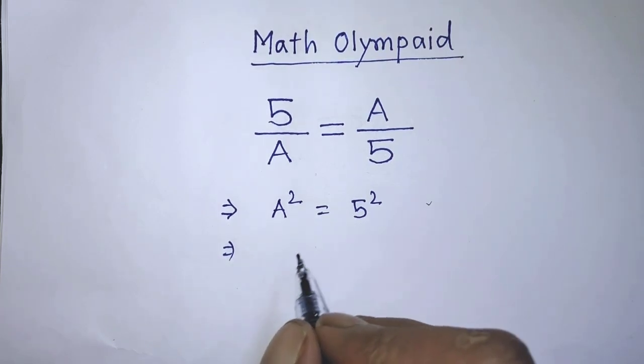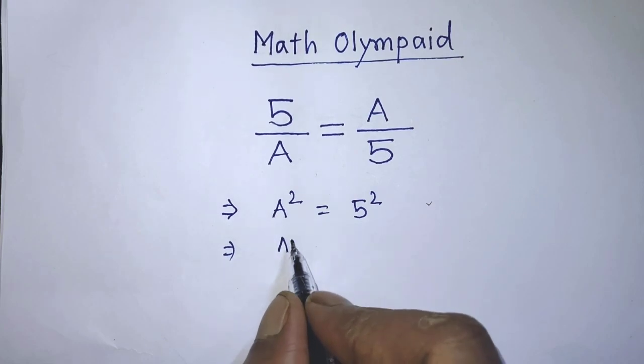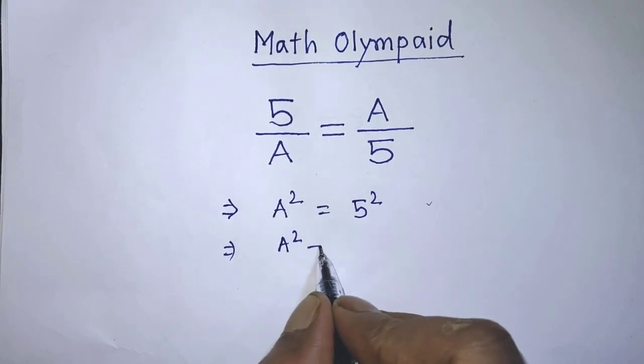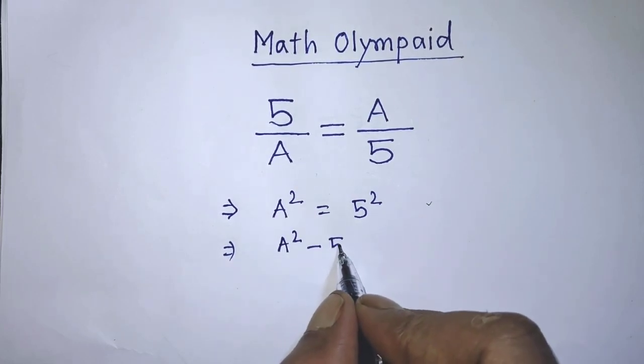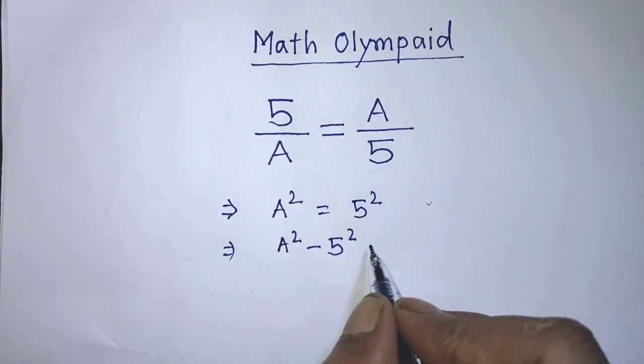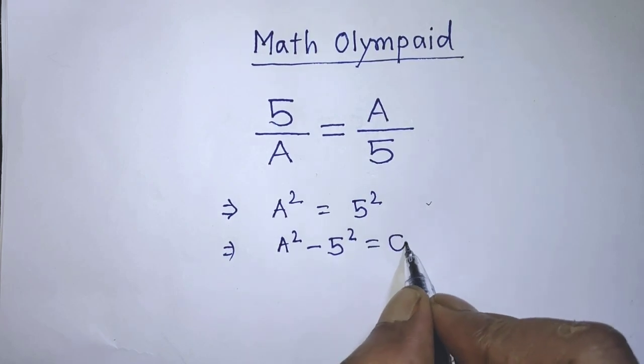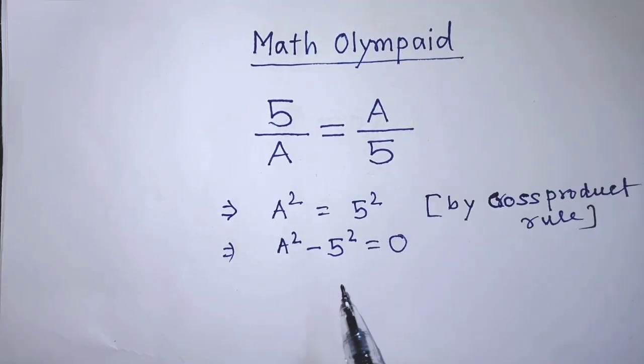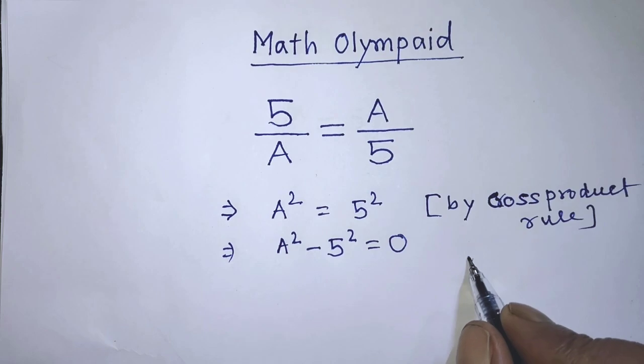Then the left hand side will become A to the power 2 minus 5 to the power 2 equals 0. To simplify the left hand side of this equation, we have to apply the formula.